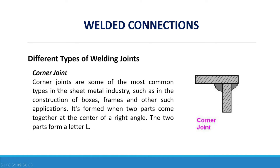Next is the corner joint. Corner joints are some of the most common types in the sheet metal industry, such as in the construction of boxes, frames, and other applications. It is formed when two parts come together at the center of a right angle, forming the letter L. This is an example of a corner joint, including a double corner joint configuration.